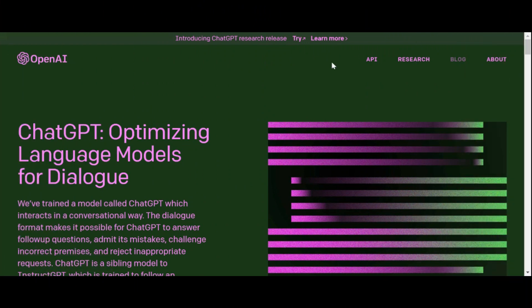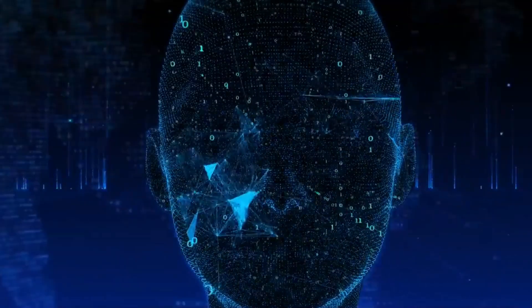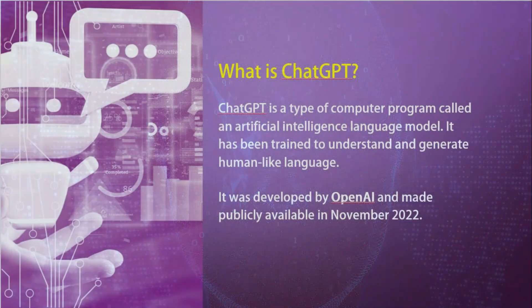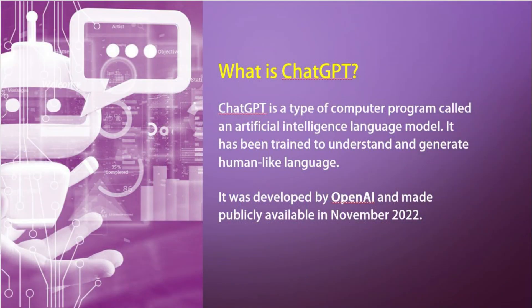ChatGPT is a type of computer program called an artificial intelligence language model. It has been trained to understand and generate human-like language. This means that you can have a conversation with it, and it will respond in a way that sounds like a person is talking to you. Think of it like having a really smart friend who can answer your questions and have a conversation with you, but instead of being a person, it's a computer program. It was developed by OpenAI and made publicly available in November 2022.